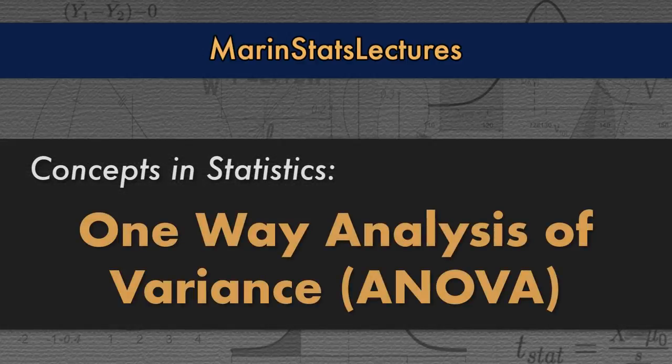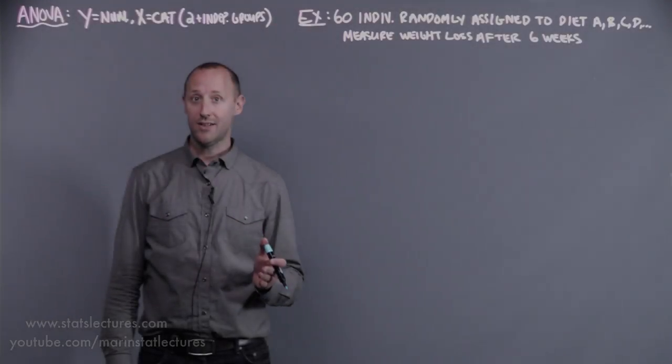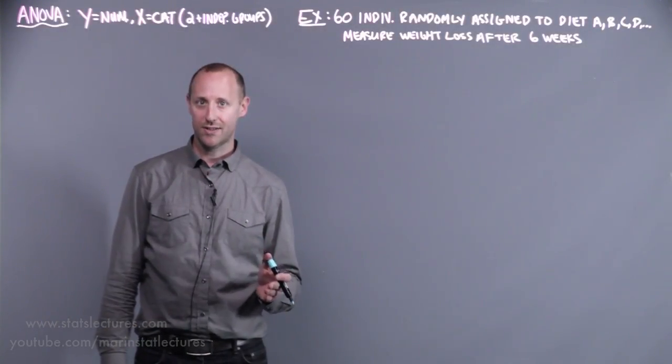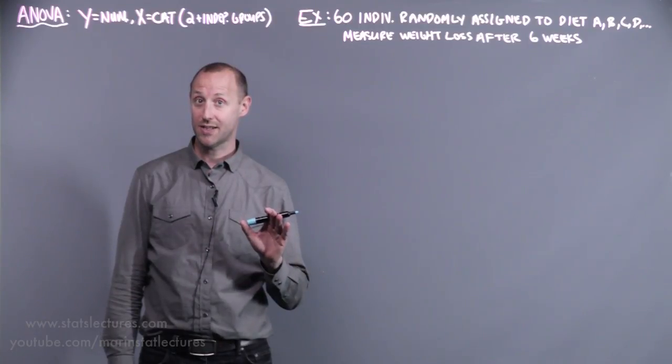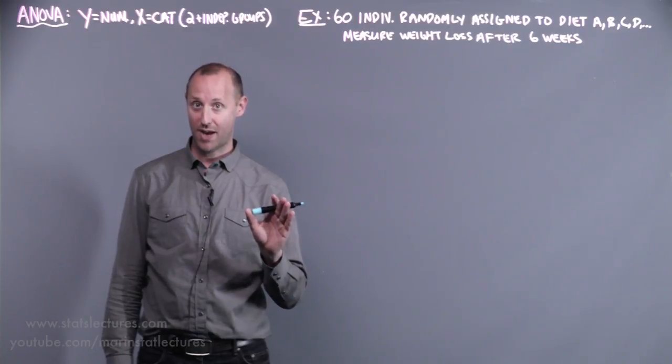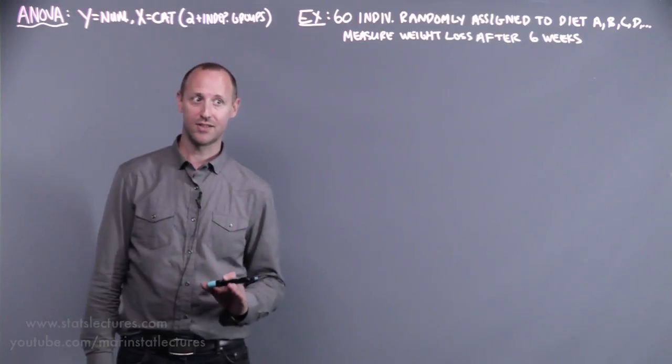We're going to talk about one-way analysis of variance, the hypothesis test. Analysis of variance is often abbreviated ANOVA. One-way analysis of variance involves having one x variable or one factor, hence the name one-way analysis of variance.